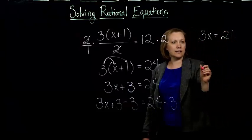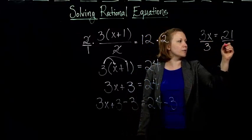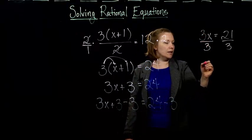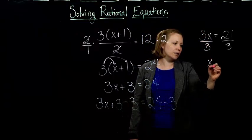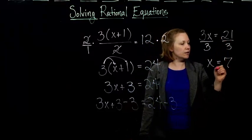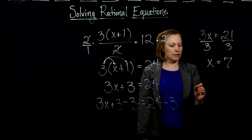And then the last step would just be to, we have to get rid of this 3. So we're allowed to divide by whatever we want on both sides. So we choose 3. So 3 divided by 3 gives me 1. 1x is the same as x, so I'm just going to write x. And 21 divided by 3 is 7. And there we have it. Our answer is x equals 7.